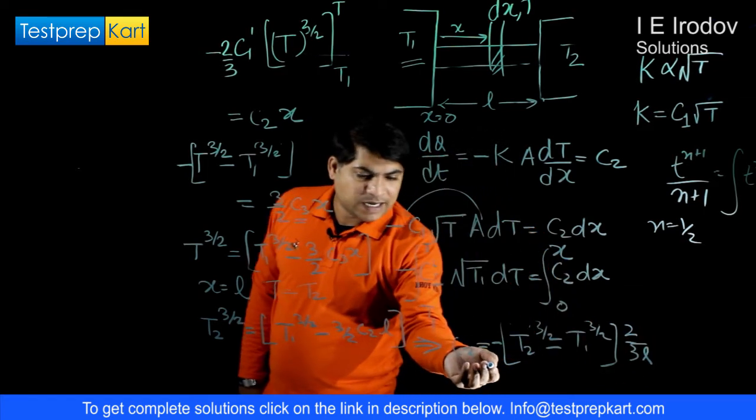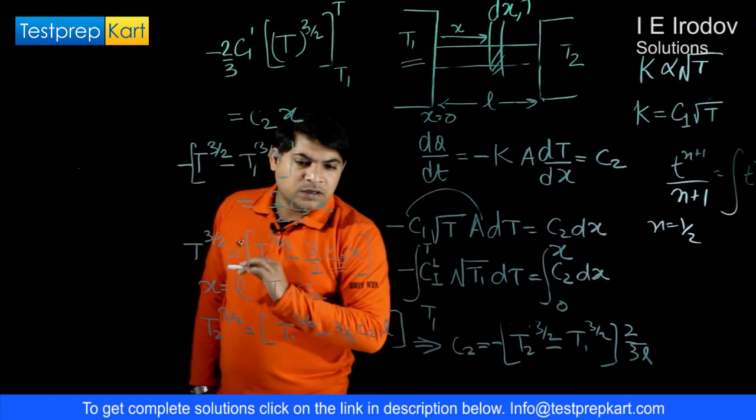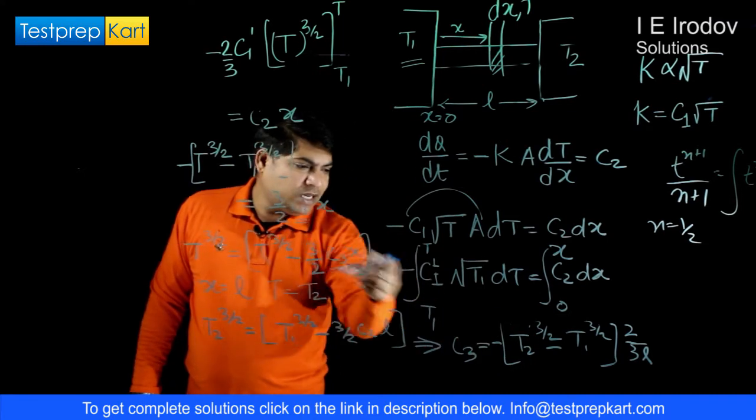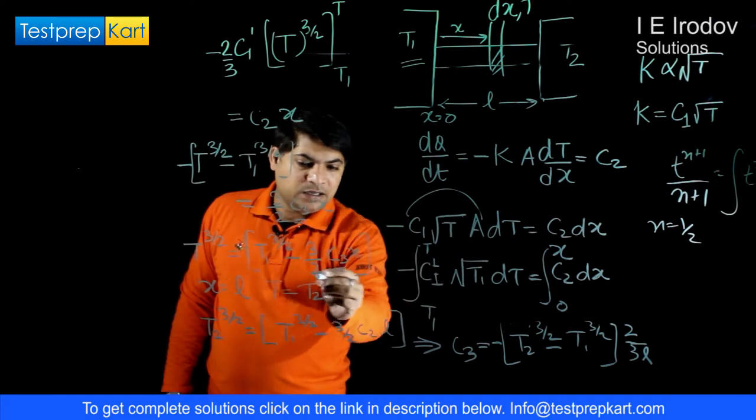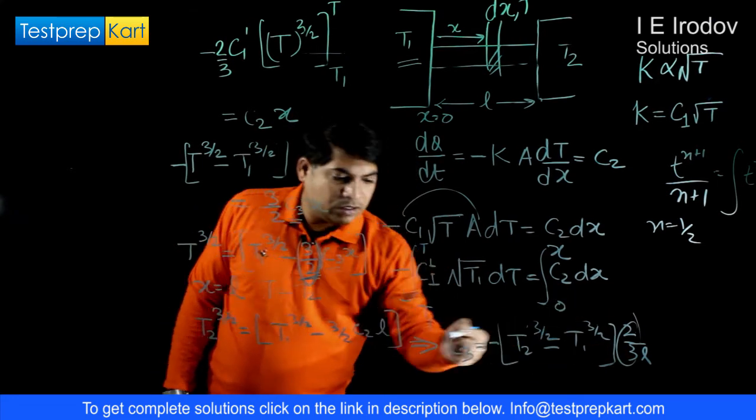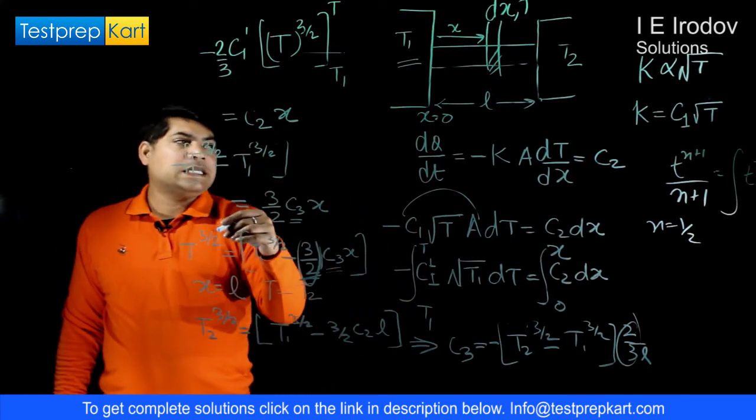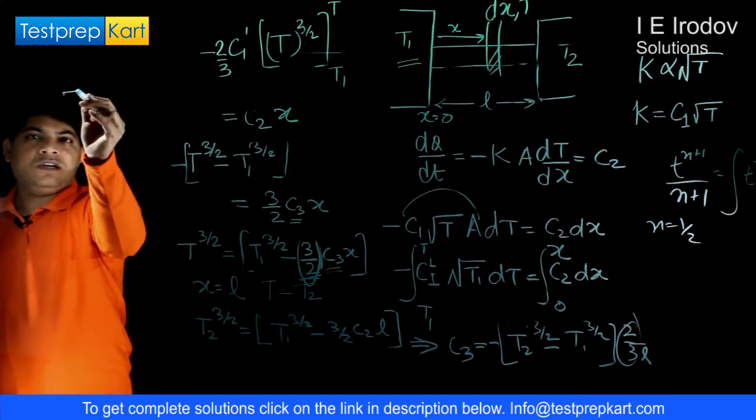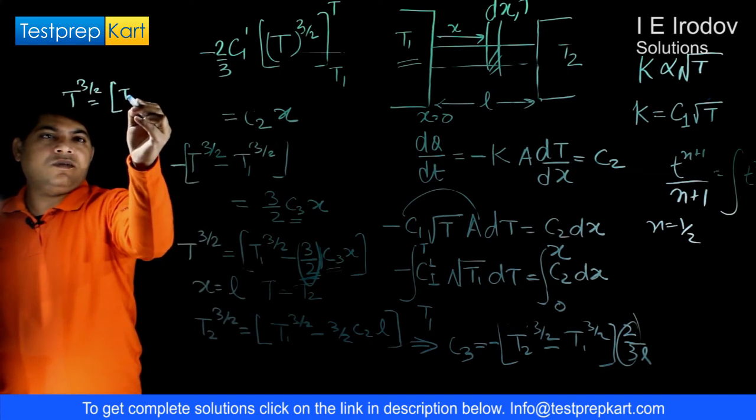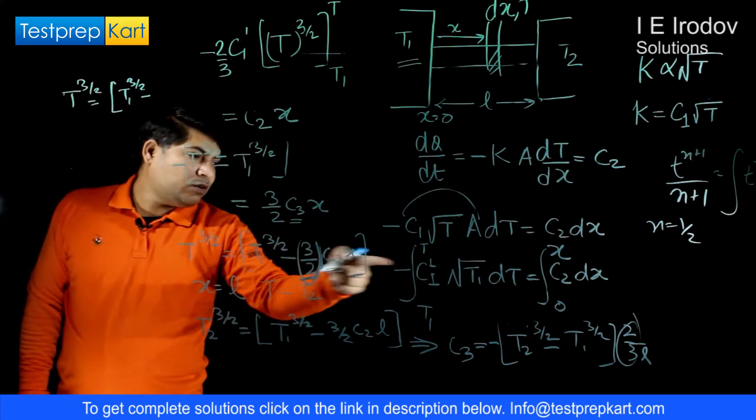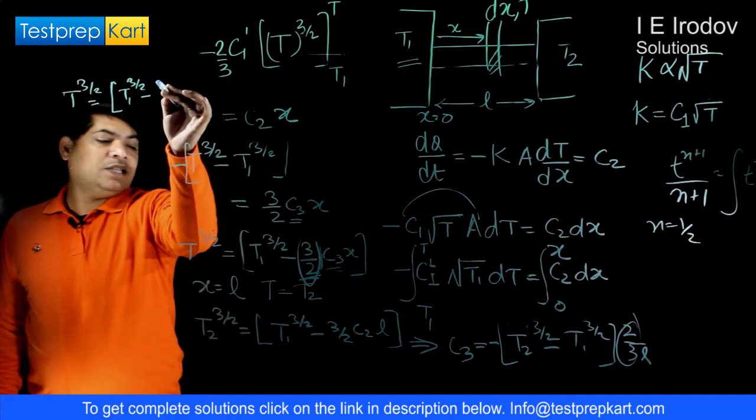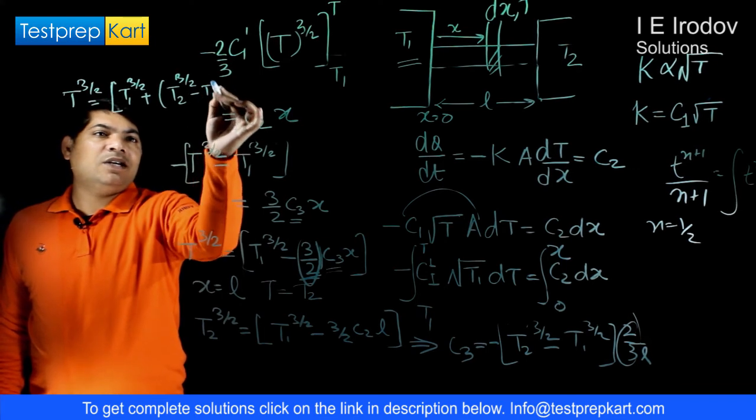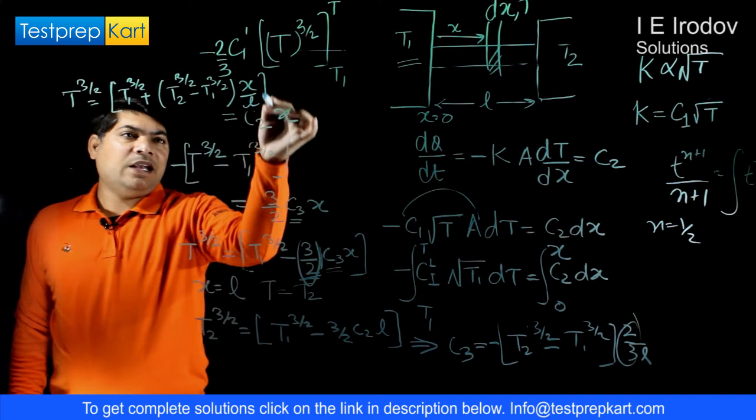This constant can be substituted here in place of C2. Here you can see it will replace C3 by 2 by 3 L, then C3 and C3 are 2 by 3 and 3 by 2 will get cancelled. From here we will get the final expression. T to power 3 by 2 is equal to T1 to power 3 by 2, minus 3 by 2 and 2 by 3 are cancelled, and the value of C3 is minus minus, plus in fact, T2 to power 3 by 2 minus T1 to power 3 by 2 into x over L.